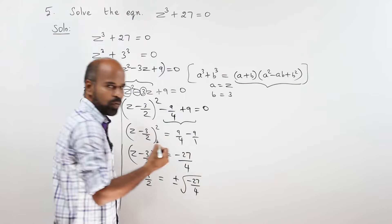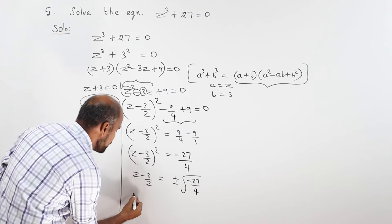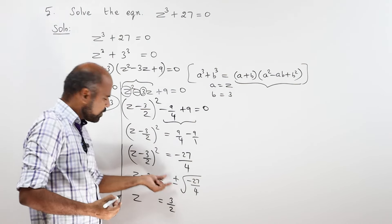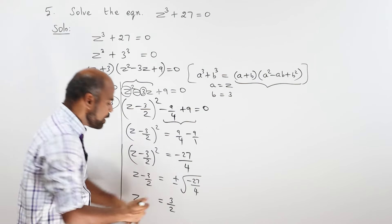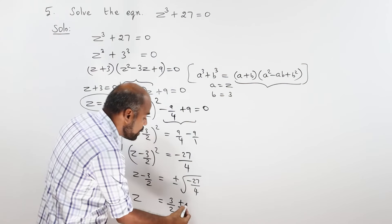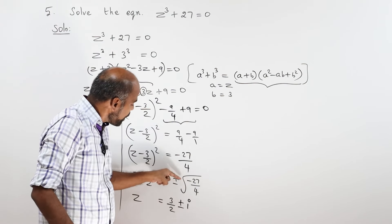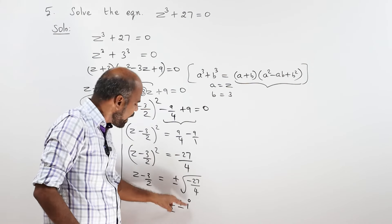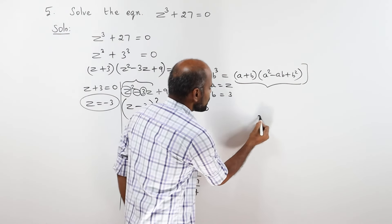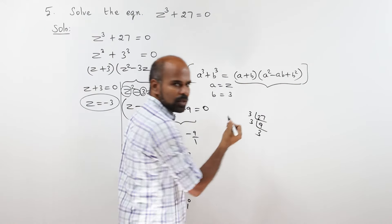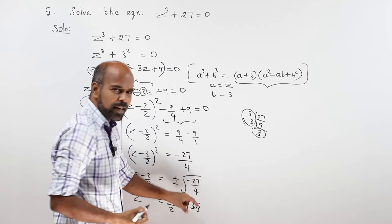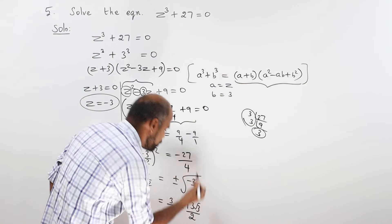Z minus 3 by 2 is equal to plus or minus square root of minus 27 by 4. You know, plus or minus. Root under minus, when it comes outside, it becomes i. Root 27 by root 4. Root 27, 27 factorize. Denominator, root 4 is 2. This is the final step.